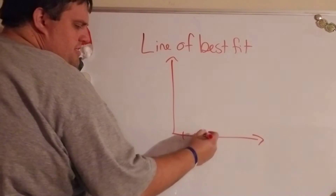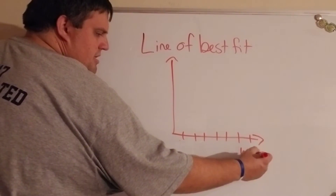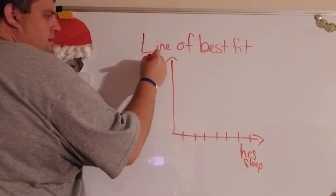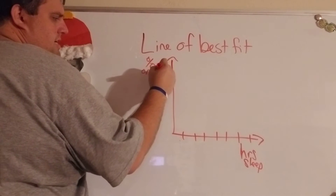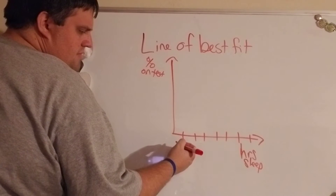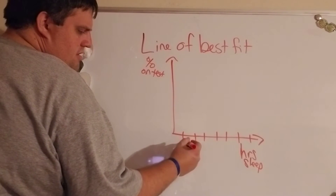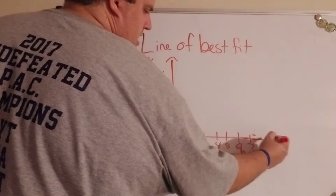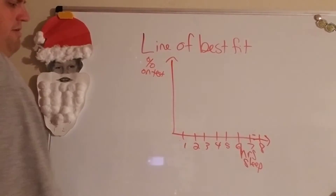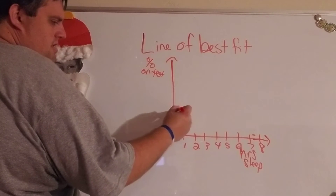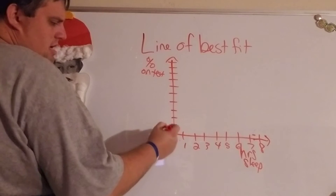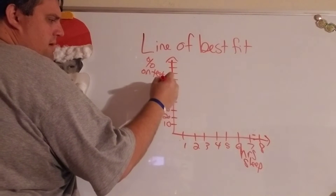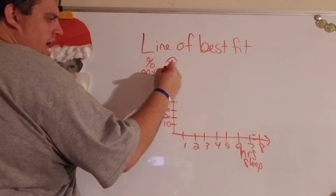Let's say you had a graph — yesterday we used hours of sleep on the x-axis and grade on a test on the y-axis. We'll make this somewhat realistic since most of you probably aren't getting eight hours of sleep. Typically with a problem like this you're going to have the data set, so you'll know exactly where those points are.